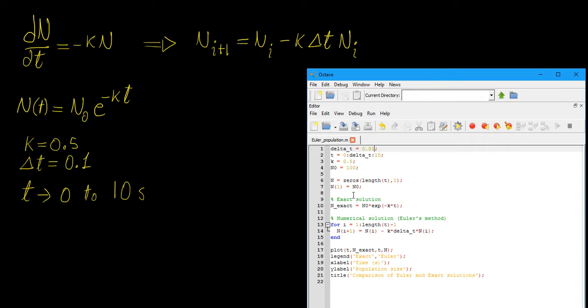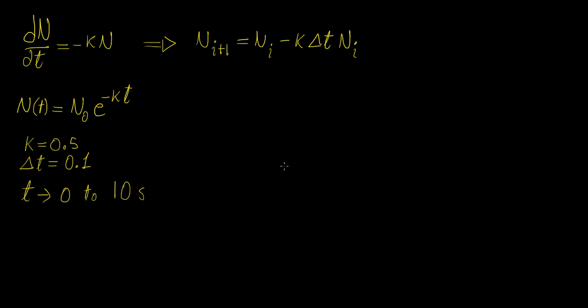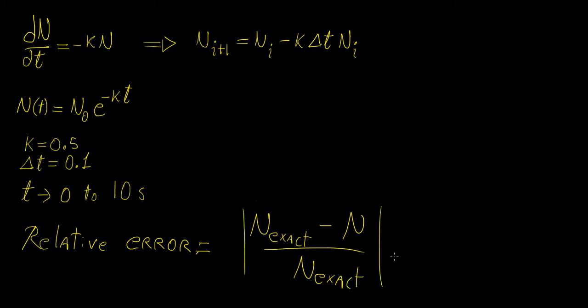Now, there is a little slight problem with the Euler method, which I'm going to show you, and it is that its error tends to increase as you increase your length of time. So, to calculate the relative error, all you're going to do is, you're going to have your exact solution minus your numerical, you're going to divide it by the exact, take the absolute value, and then multiply it by 100. So, this is going to give you the relative error between the two solutions in terms of a percentage.